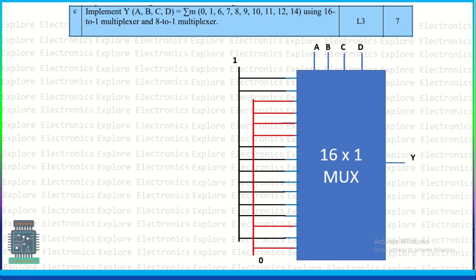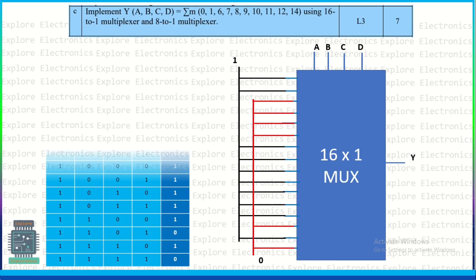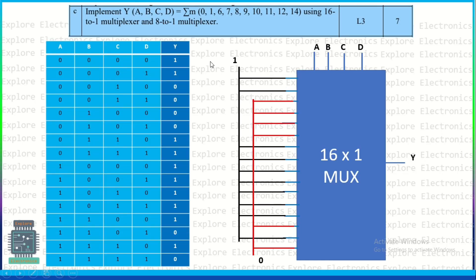Implement Y(A,B,C,D) using a 16:1 MUX and an 8:1 MUX. The truth table is drawn with minterms 0, 1, 6, 7, 8, 9, 10, 11, 12, 13, 14 giving output 1, and the rest giving 0. For the 16:1 MUX, select lines are A, B, C, D; inputs I0 to I15 are connected — inputs corresponding to minterms are tied to 1, and the rest are tied to 0.